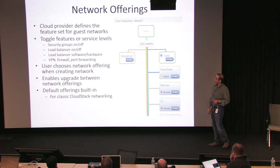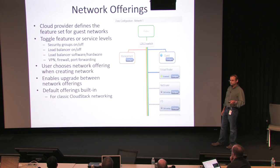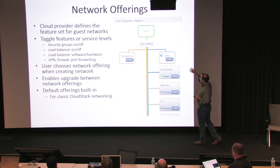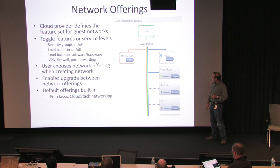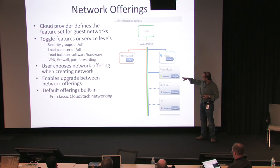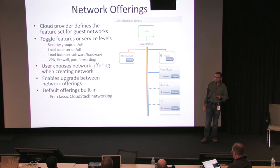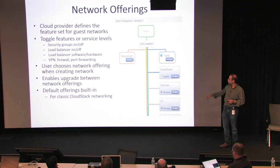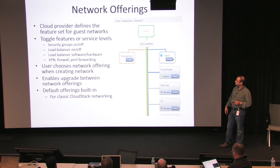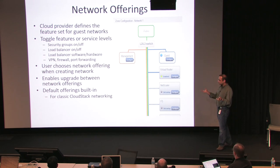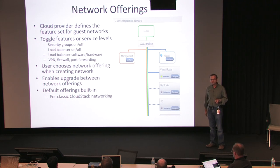A lot of this magic happens through a concept called network offerings. What the admin does is use a UI that lets him specify what services are enabled and who is providing that service. The virtual router is enabled and when you press configure, he can specify which services the virtual router is offering. When you create the network, you choose a network offering. You can also upgrade between network offerings. When you install CloudStack, three or four default network offerings are already installed by default using the virtual router.